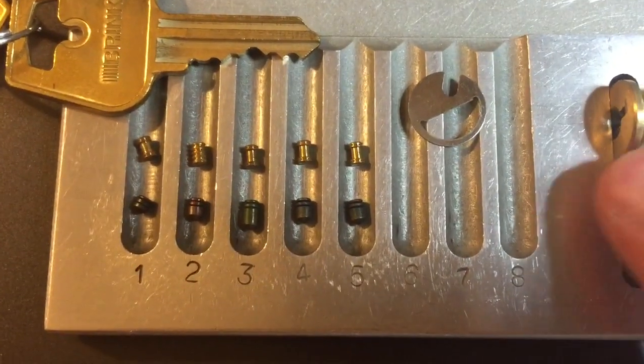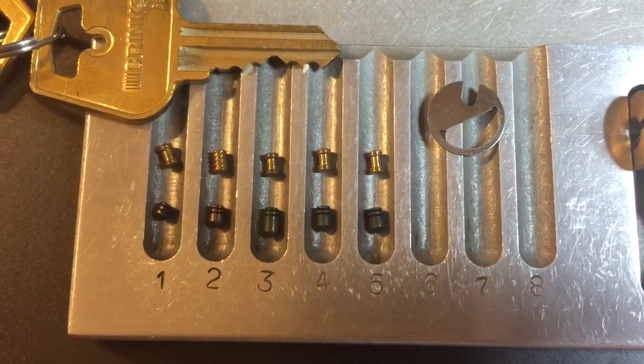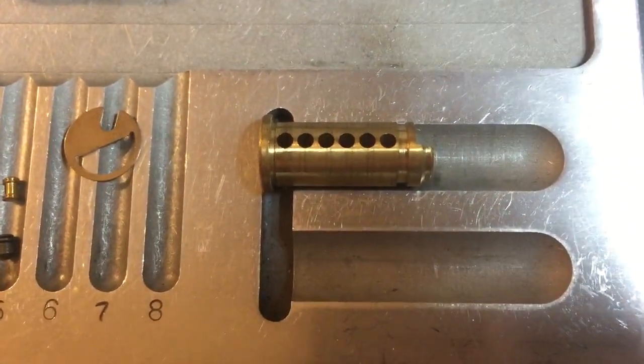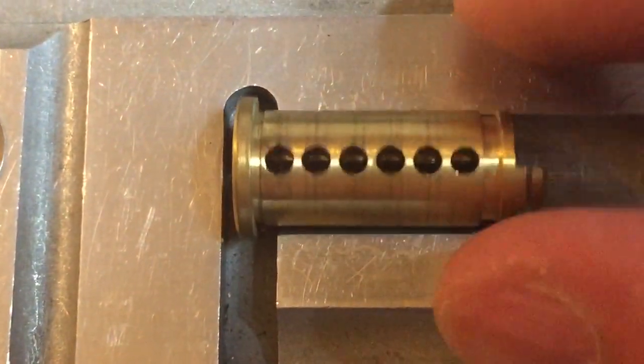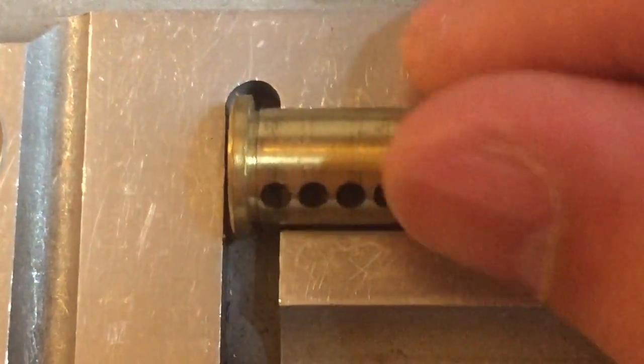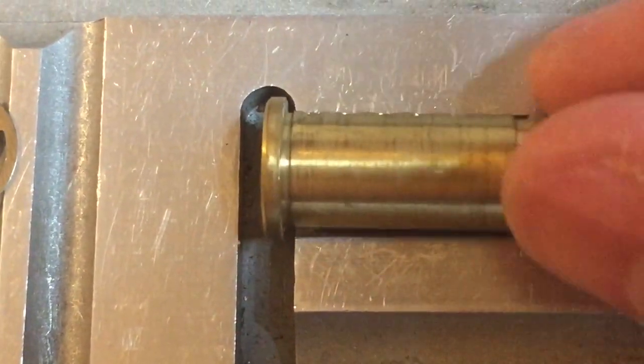You can see right over here by slot six and seven we have an anti-bypass plate. And then the core nothing particularly unusual about it other than it's a six pin core and only five of them are pinned up.